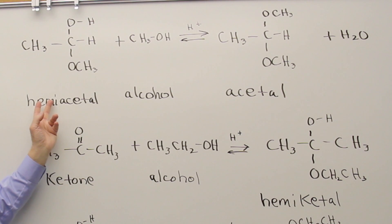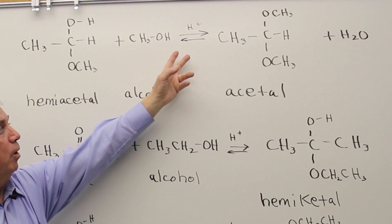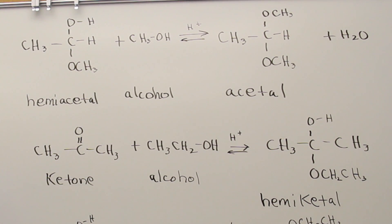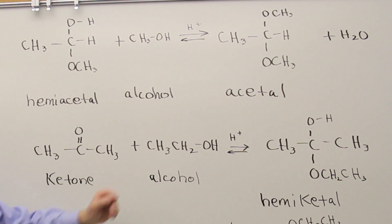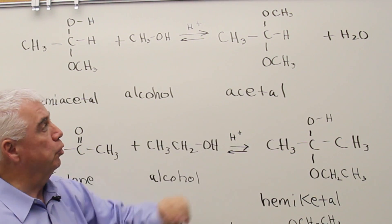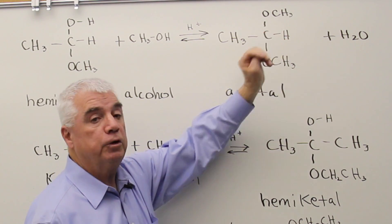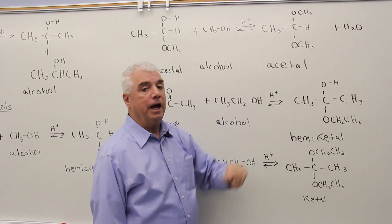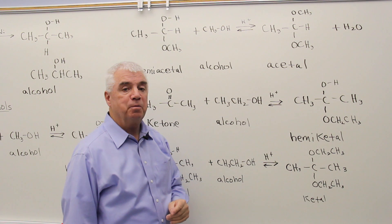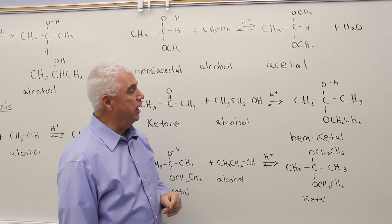Here we've got a hemiacetal going to react with a second molecule of alcohol. Reversible process requiring H⁺ as a catalyst. And what happens this time is that the OH disappears. It combines with the hydrogen of the alcohol to form water as the second product. And the OCH₃ takes the place of the OH. So we get a product over here. It's a new functional group for us. We've got a carbon with a hydrogen because it was originally an aldehyde. And now it's got two OR groups on it. That's called an acetal. And again, the A reminds me that the original starting material was an aldehyde.